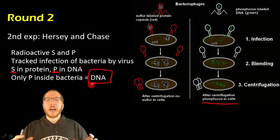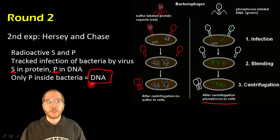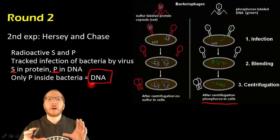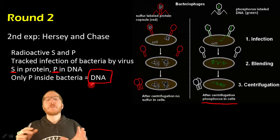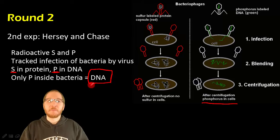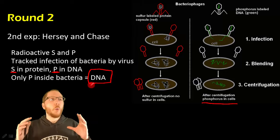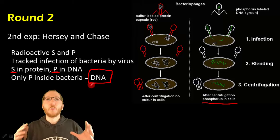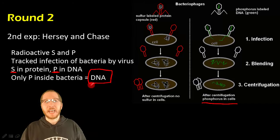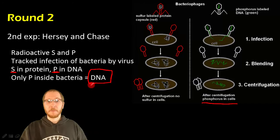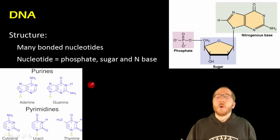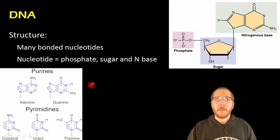It was really this experiment that made us understand that, all right, we know it's between these two, and now it obviously must be DNA. From here on forward, we know DNA is the genetic material — but we still didn't know much about DNA. We knew what it was made of, but not its structure. So there was now a race to figure out what DNA looks like and how it works, because we just knew it was apparently really important and carried the genetic information for cells.